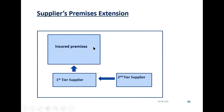Insured Maruti Udyog is working fine — there is no loss or damage. But if there is a damage at the bonnet supplier's premises — a fire loss, a flood loss, or any other loss — and the supply is interrupted, the insured will have to stop production because without the bonnet, they cannot sell the car. Although there is no damage to the insured premises, still they will suffer loss of gross profit due to stoppage of production. These kinds of losses will be paid under the Suppliers Premises Extension.